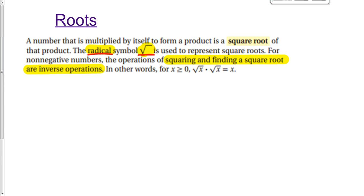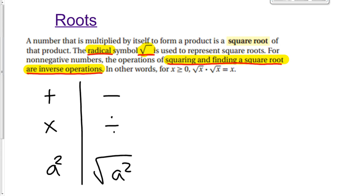For non-negative numbers, the operations of squaring and finding a square root are inverse operations. So this is another thing I want you to know. Squaring and square roots, they're inverses. It's kind of like adding and subtracting are inverses, or multiplying and dividing are inverses. Squaring a number and square rooting a number are inverses as well, because they undo each other.